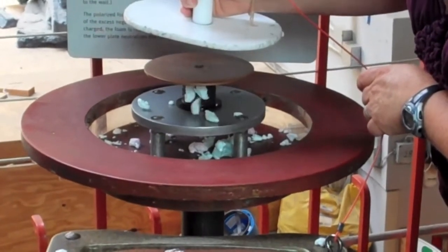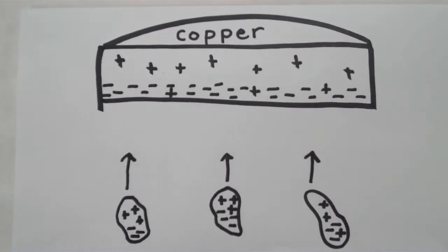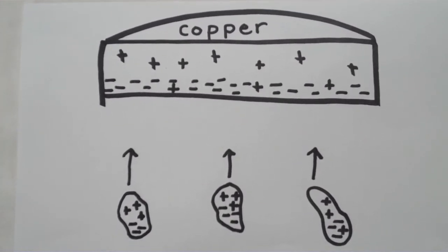Now with the copper plate charged this way, it will begin to attract the Styrofoam. The Styrofoam changes and it's got positives on the top and negatives on the bottom. And they will jump up and down.